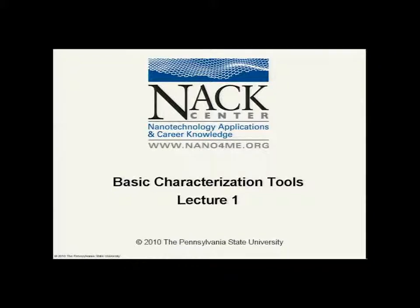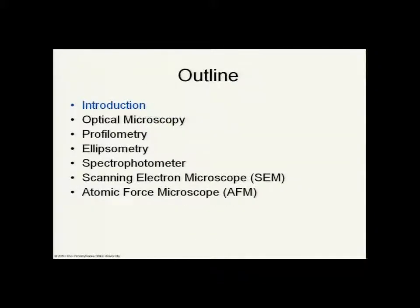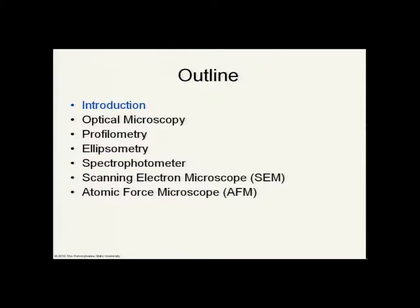This is lecture one of the unit titled Basic Characterization Tools. Here's an outline of the talk. First, I'll give an introduction, then we'll talk about topics and instruments including optical microscopy, profilometry, ellipsometry, a UV-Vis spectrophotometer, a scanning electron microscope, and we'll finish up with the atomic force microscope, AFM. This talk is designed to be an introduction to some of these topics. These particular tools were chosen because they're some very common instruments used in micro-nanotechnology. This is not intended to be a comprehensive overview of the operation of each one. There is a later course titled E-Sci 216 which will be a more comprehensive treatment of different characterization tools used in micro-nanotechnology.